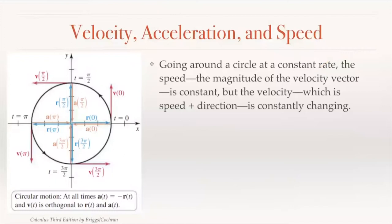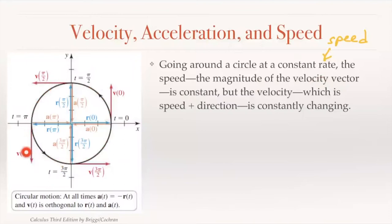For example, going around in a circle at a constant rate — meaning constant speed — the magnitude of the velocity vector is constant. You can see the velocity vectors are changing, but the speed is always constant. For example, Earth going around the Sun always has constant speed, but the velocity is changing — since velocity is speed plus direction, it is constantly changing.